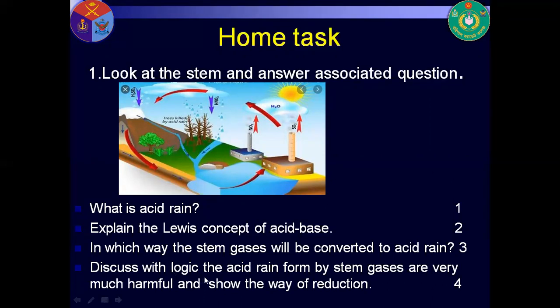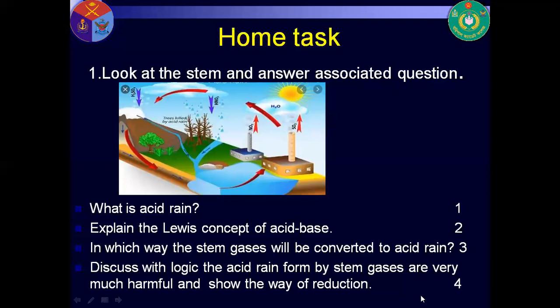Fourth question: discuss with logic the acid rain formed by steam gases and show the way of reduction. From the steam gases, the formed acid rain — nitric acid and sulfuric acid — is very much harmful. It creates different types of problems and reduces the pH of soil and water, sometimes killing microorganisms. For reduction, we need to produce less sulfur dioxide and nitrogen dioxide, use catalytic converters, and use chemical reactions to convert the gases to inactive compounds.